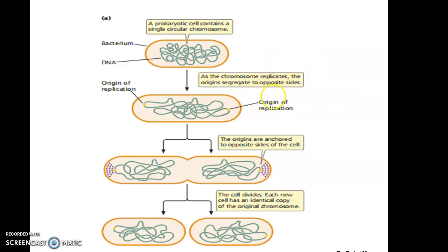The origins then move towards opposite sides. In some bacteria, certain proteins bind near the origin of replication, and after this binding the cells start to divide.